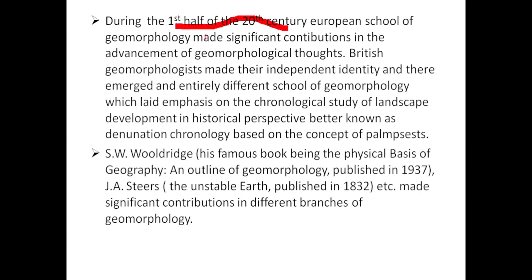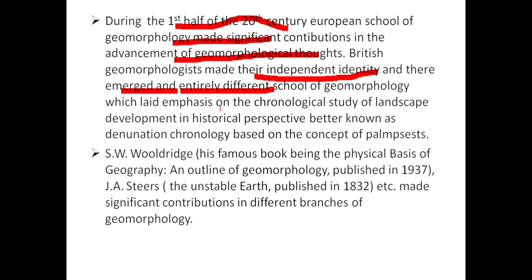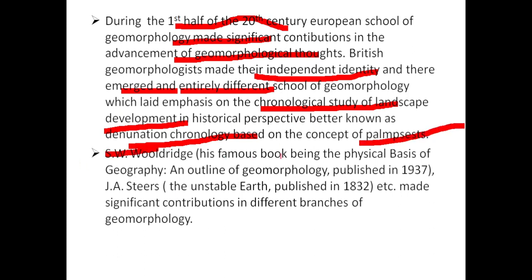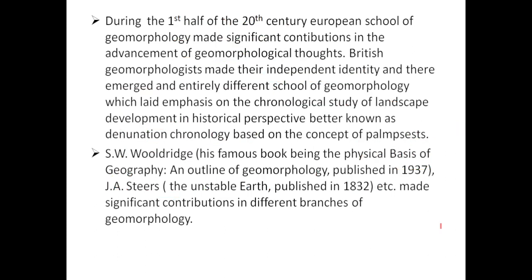During the first half of the 20th century, the European school of geomorphology made significant contributions. British geomorphologists developed their independent identity, and there emerged an entirely different school of geomorphology that placed emphasis on chronological studies of landscape development in historical perspective — known as denudation chronology, based on the concept of palimpsest. S.W. Wooldridge's famous book Physical Basis of Geography and Outline of Geomorphology was published in 1937. J.A. Steers's The Unstable Earth was published in 1932.